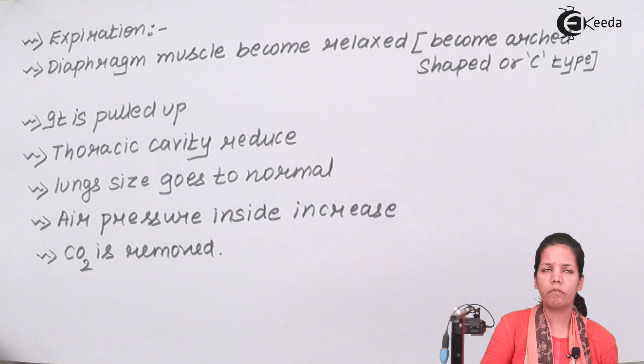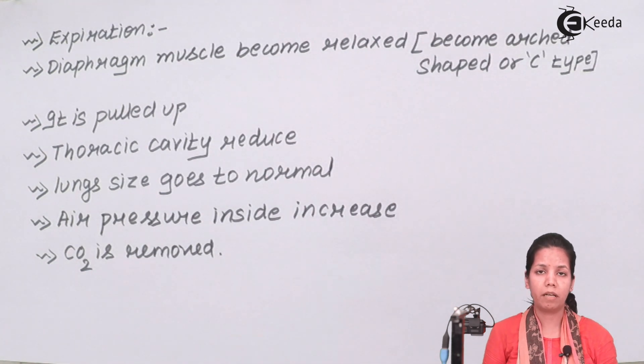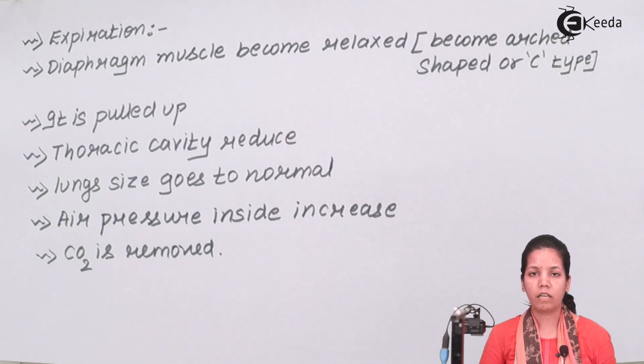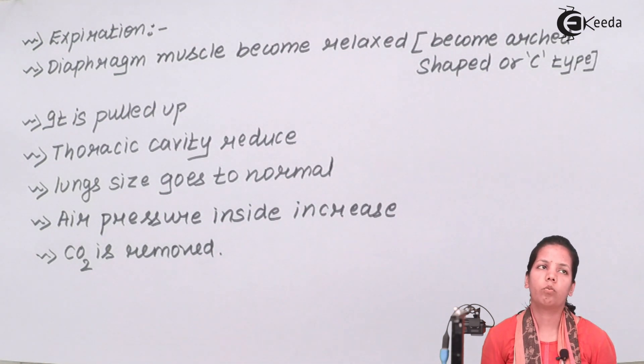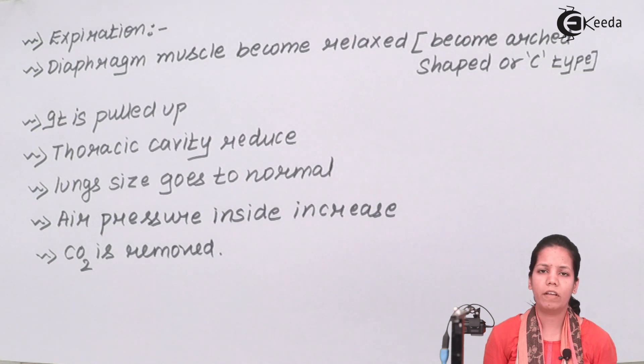So students in the part of inhalation diaphragm basically becomes flat and everything goes down accordingly. But in the part of exhalation or expiration diaphragm comes back to its arc or C shape and the process goes on to remove carbon dioxide. Students in this part of the chapter we came across inspiration or inhalation or you simply say expiration or exhalation. I hope you are very clear about this concept. Thank you.